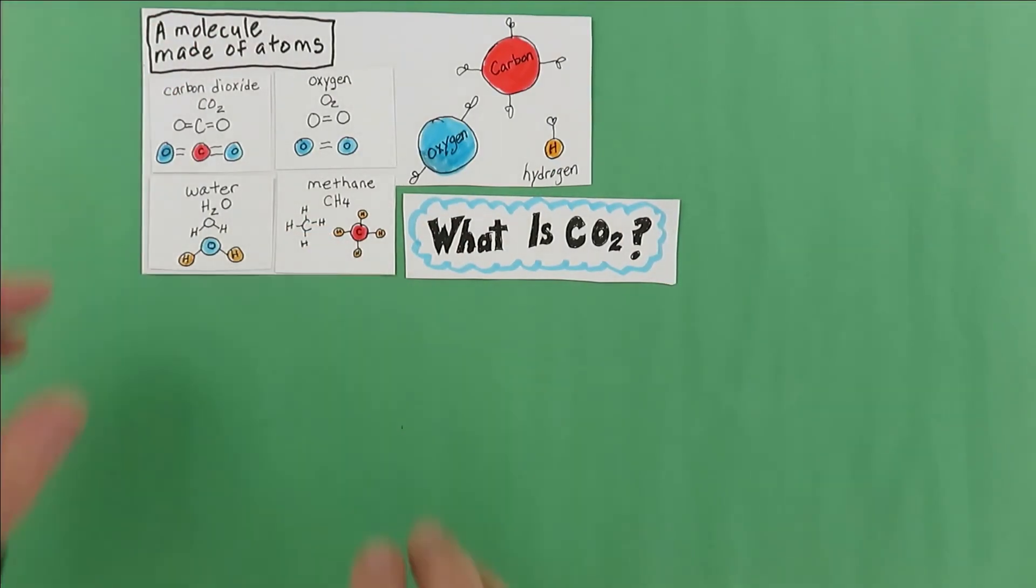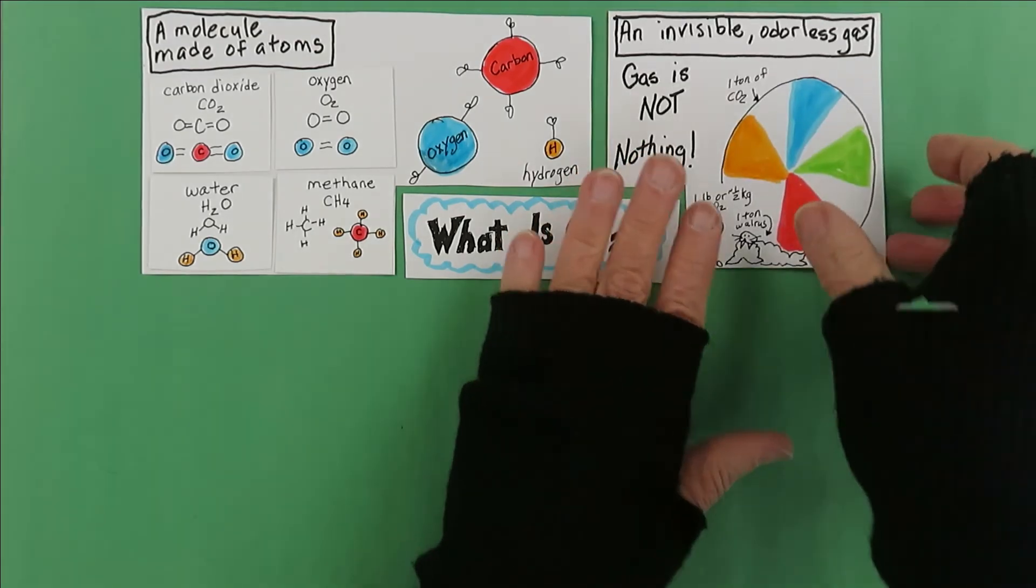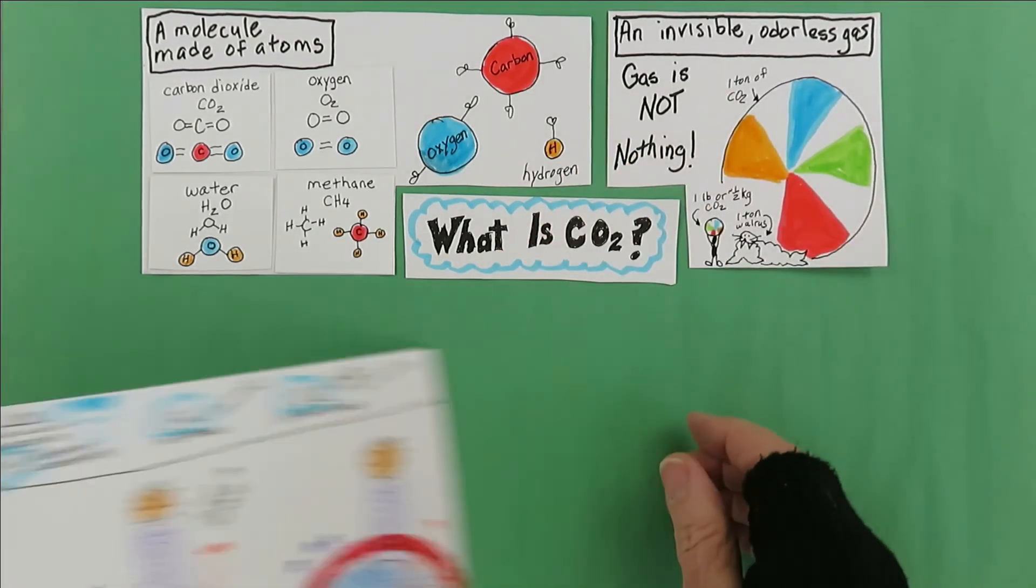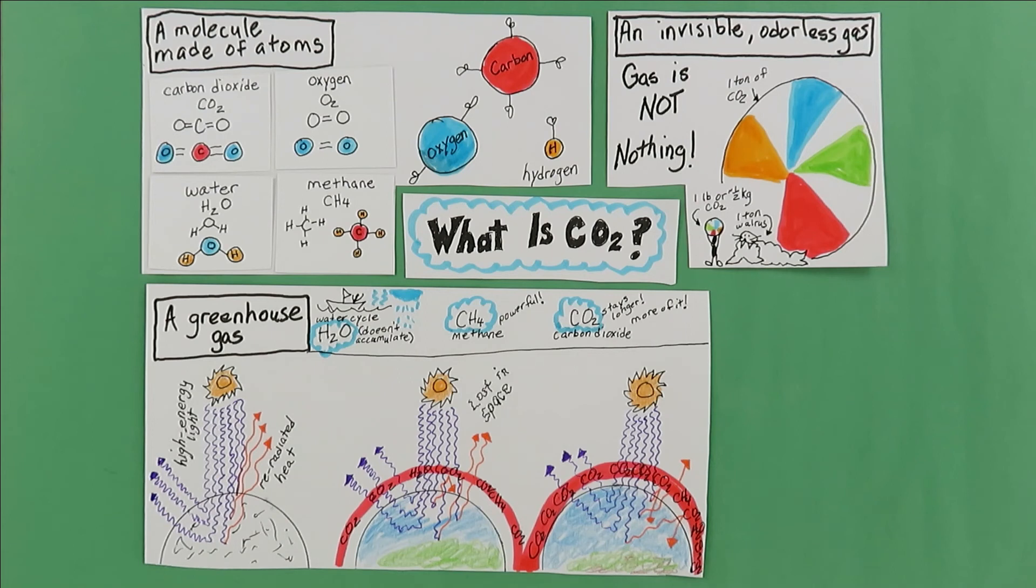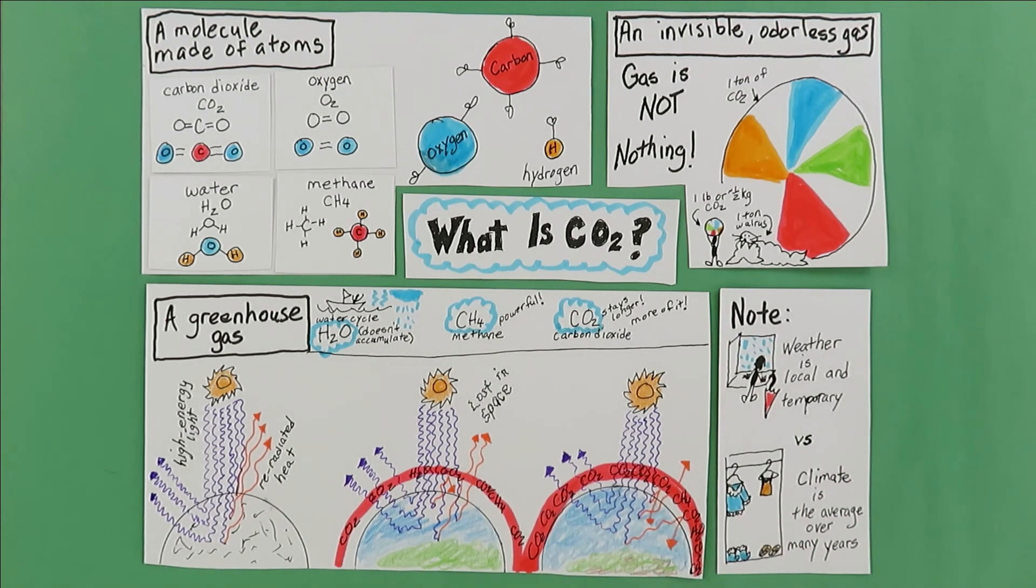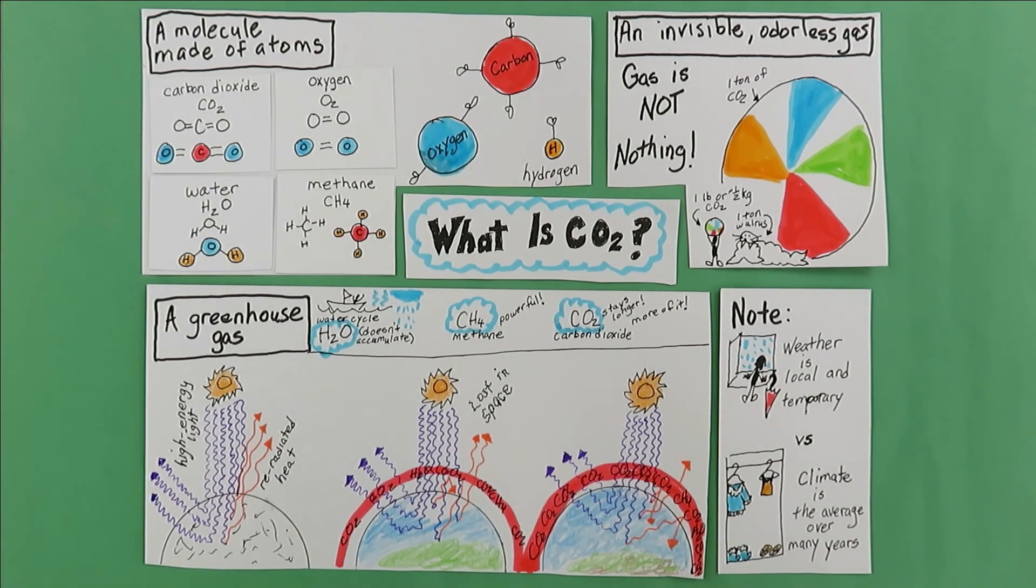Okay, let's recap. CO2 is a molecule made of atoms. It's an invisible odorless gas. It's a greenhouse gas that captures heat. And extra greenhouse gases will affect our weather and our climate. We'll talk about that as we answer more questions about CO2 in later episodes.